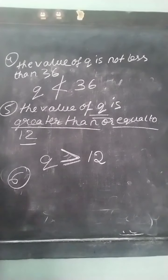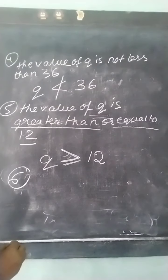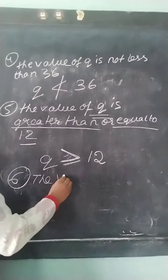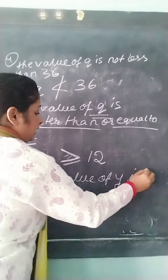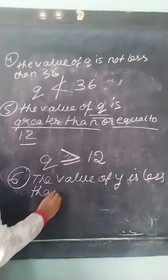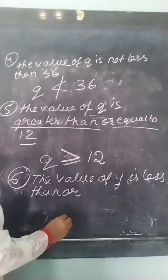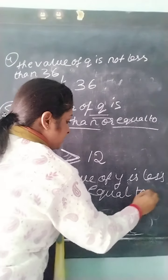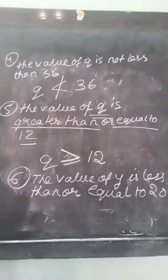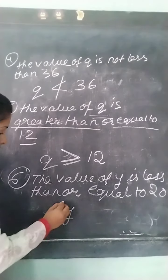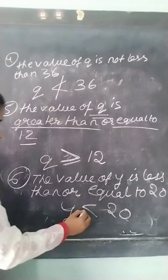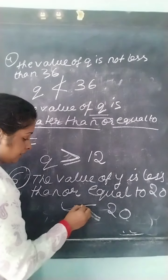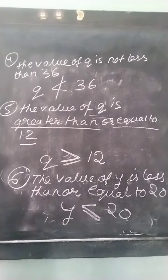Sum number 6: the value of Y is less than or equal to 20. How will you express this? Y is less than or equal to 20. You have to place the equal to sign just under the less than symbol, giving Y ≤ 20. This is how you will solve the sums.